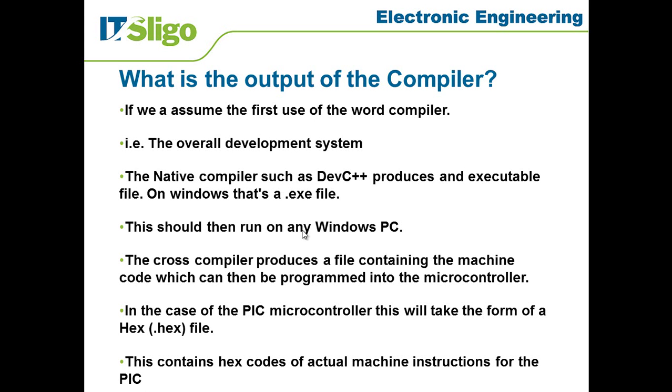Now, an example of the cross compiler—my apologies if I need to go back there—an example of the cross compiler which we said was the MPLAB X and the XC8 compiler, this produces a file containing the machine code which can then be programmed into the microcontroller. So you need a special device to get it off your machine that you developed it on and onto the piece of hardware. In this case, the file that's created for the PIC microcontroller will take the form of a hex file or a .hex file.